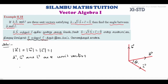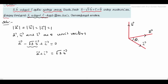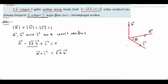So, the condition is satisfied. The condition is A vector minus root 3 B vector plus C vector is equal to 0. So, A vector plus C vector is equal to root 3 B vector. I am squaring on both sides, because the value needed requires squaring both sides.